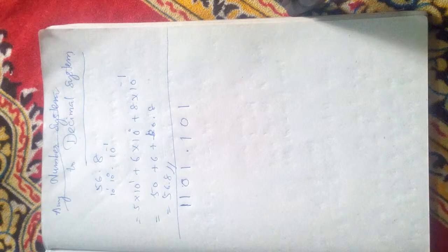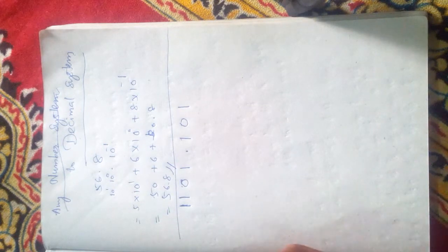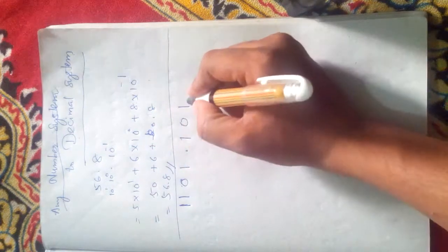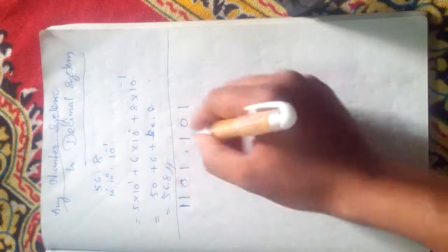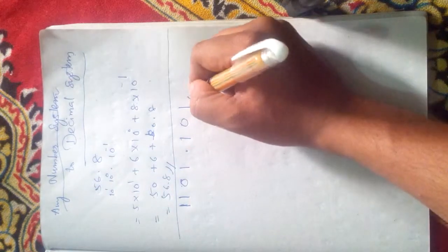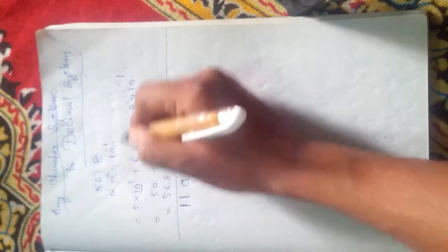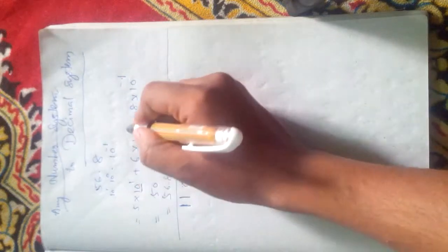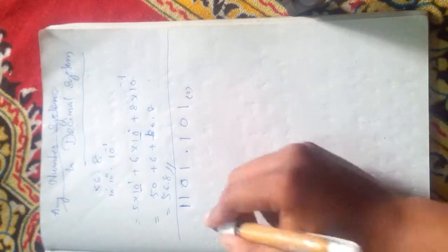One formula to convert any number system to decimal: first find out which system it is. The given number is in binary system, so take that system as a base. The powers are the positions. The base of binary system is 2, so write it down with positions 0, 1, 2, 3.